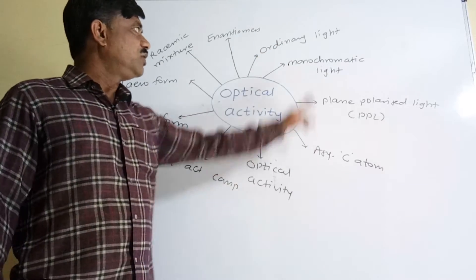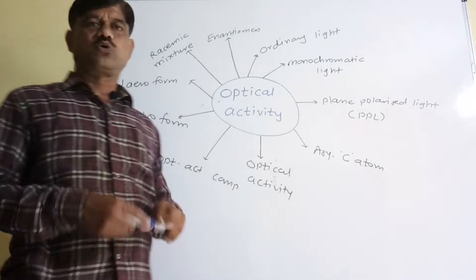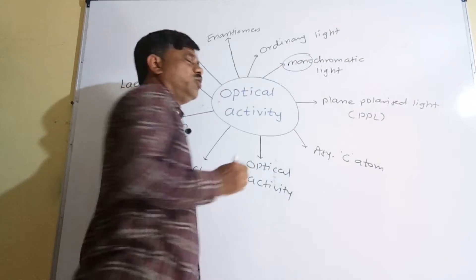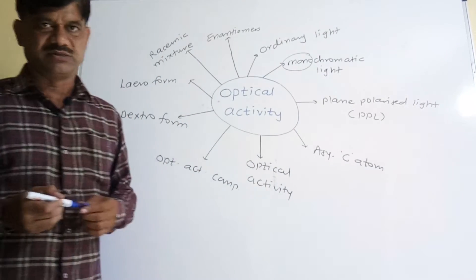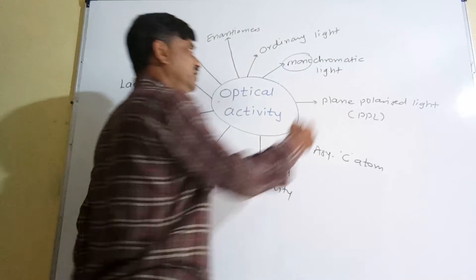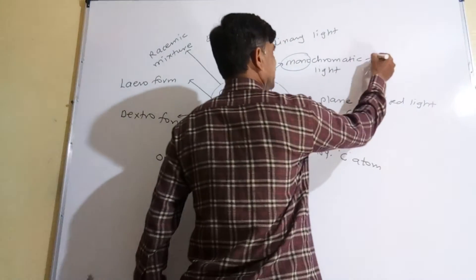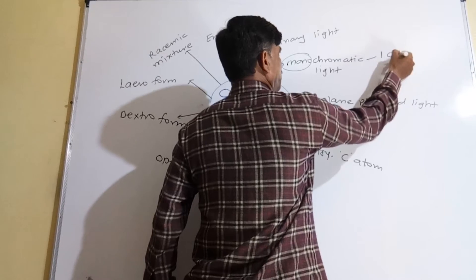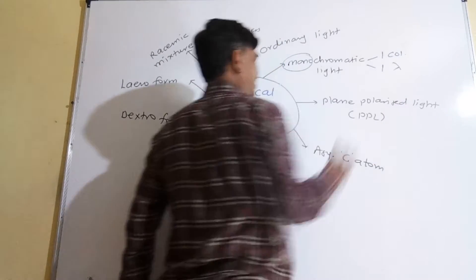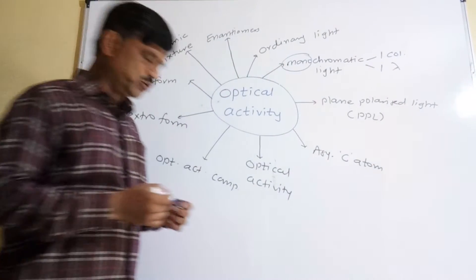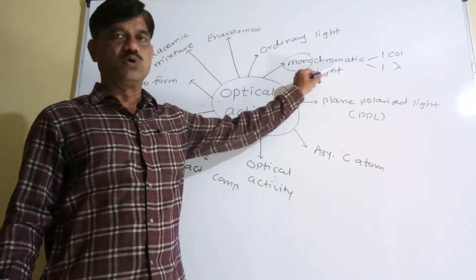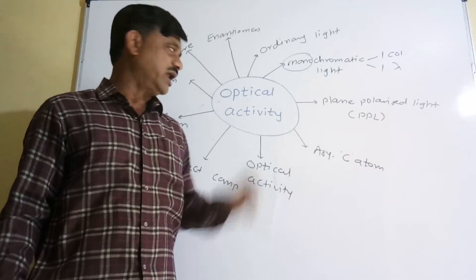Now, what about monochromatic light? Mono means one, and chroma indicates color. So, light of one color and one wavelength — that is known to be monochromatic light.